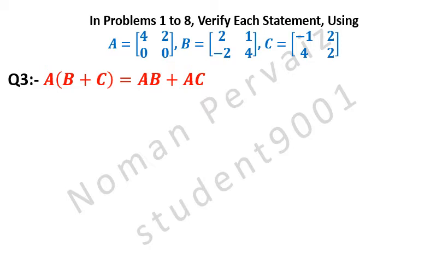Question number 3 is: A into (B plus C) is equal to AB plus AC.